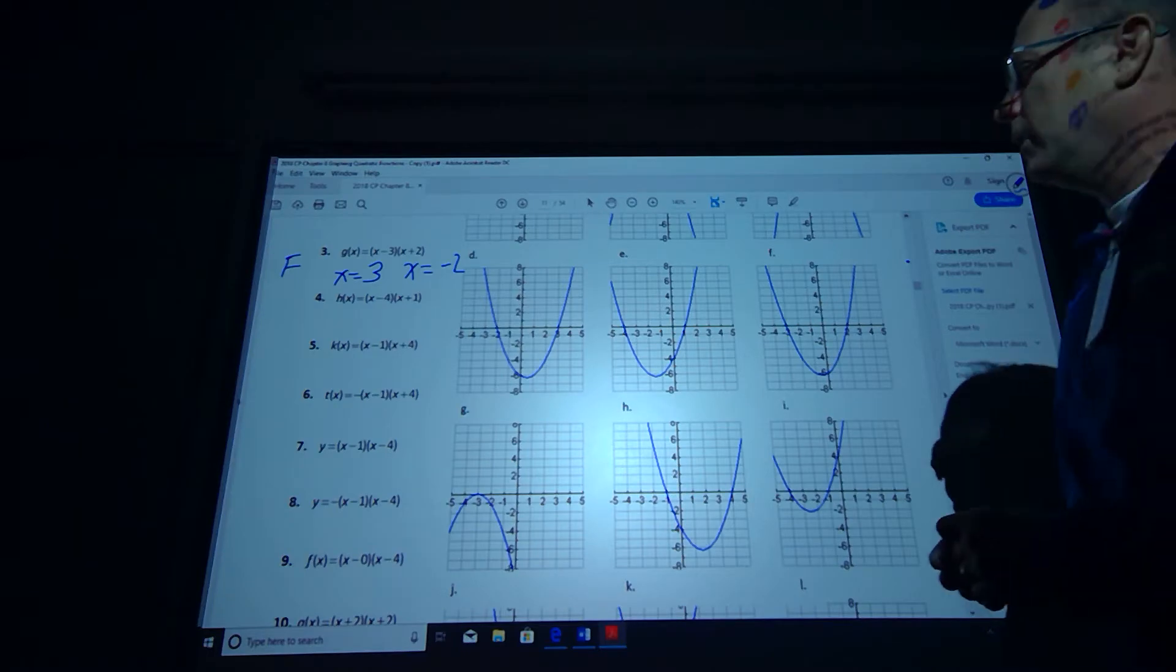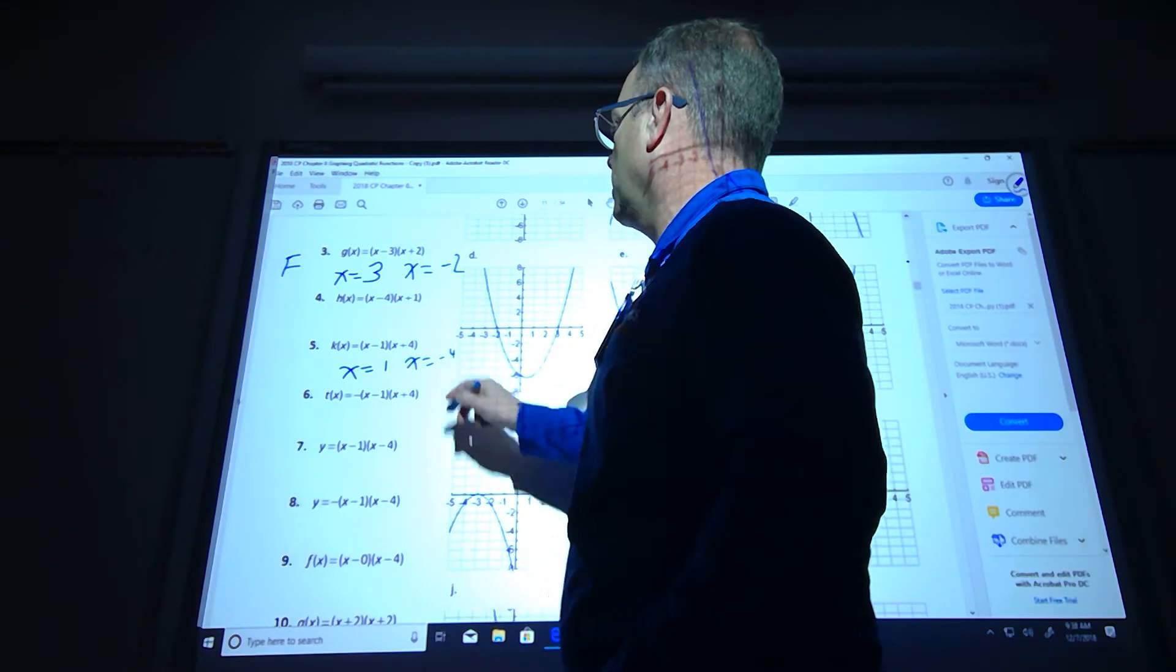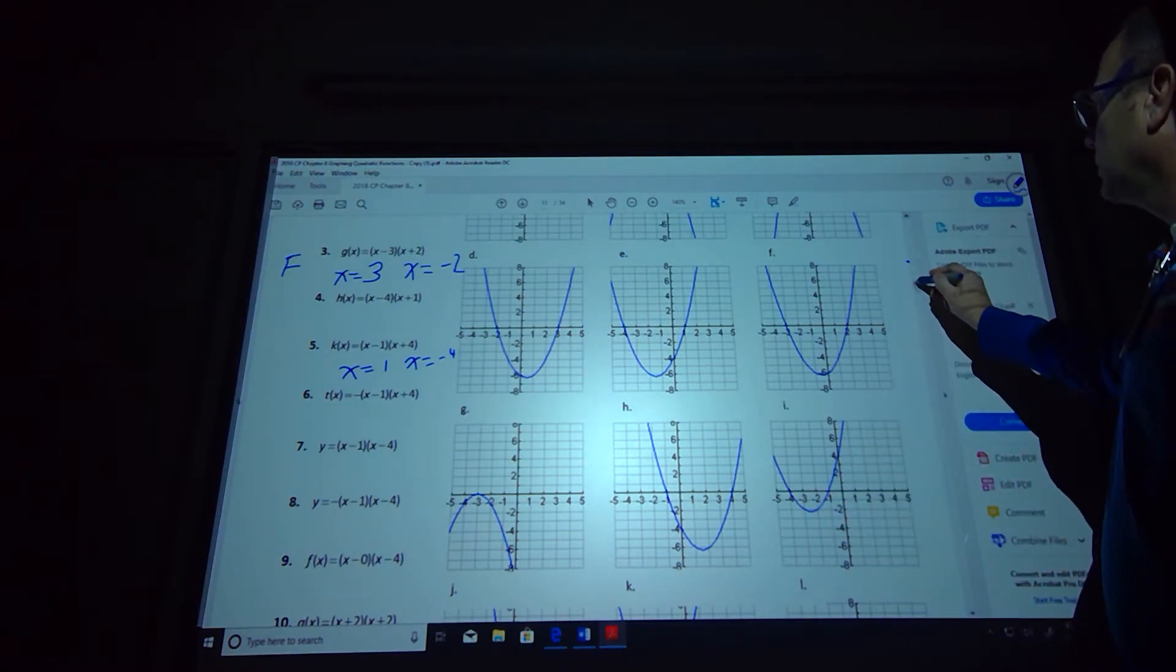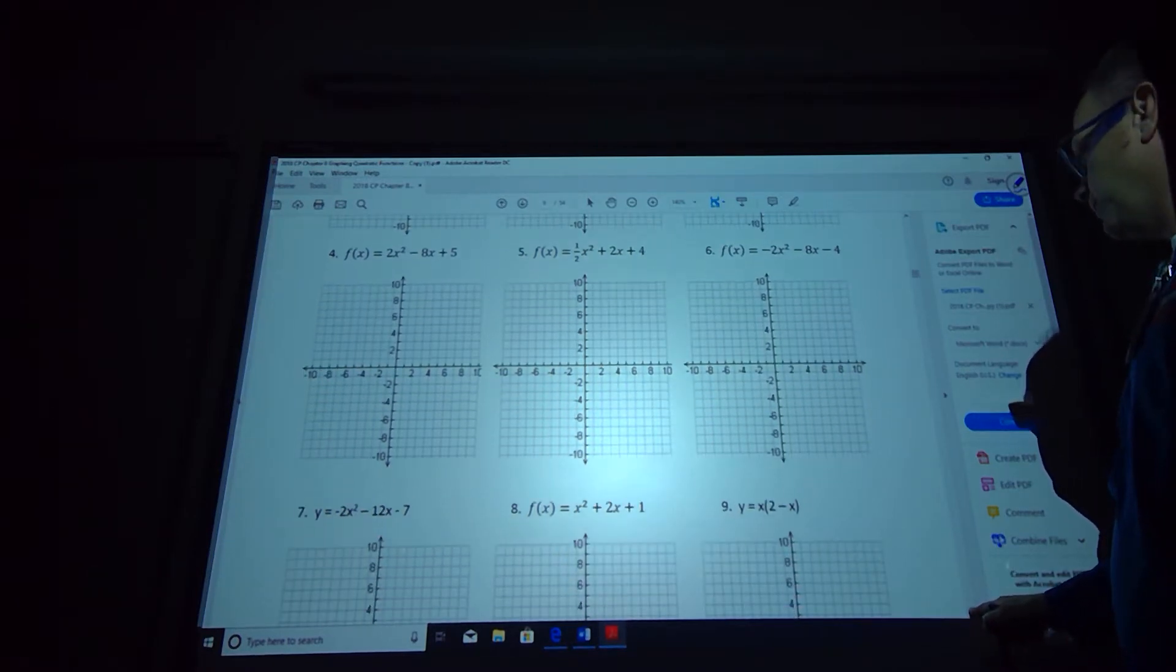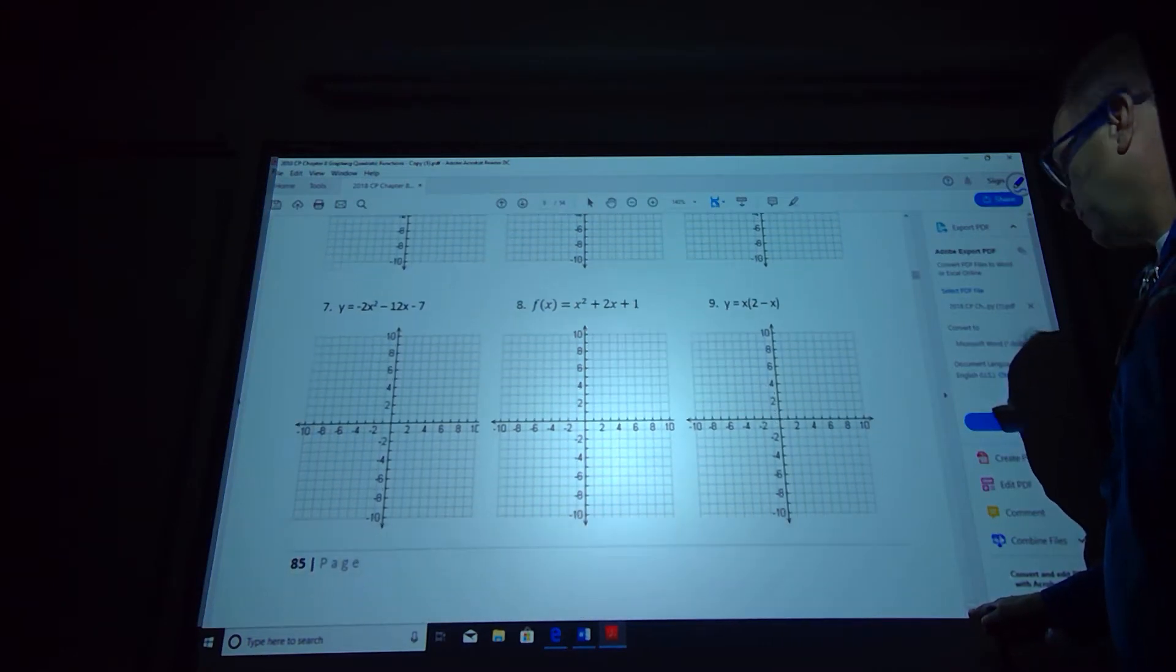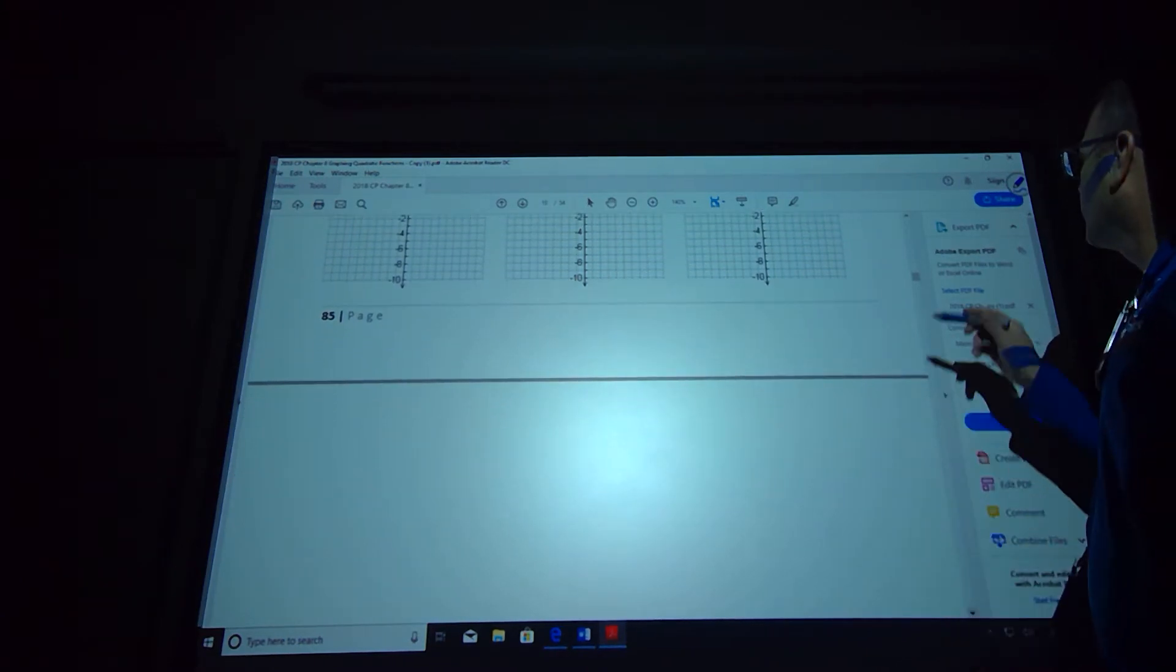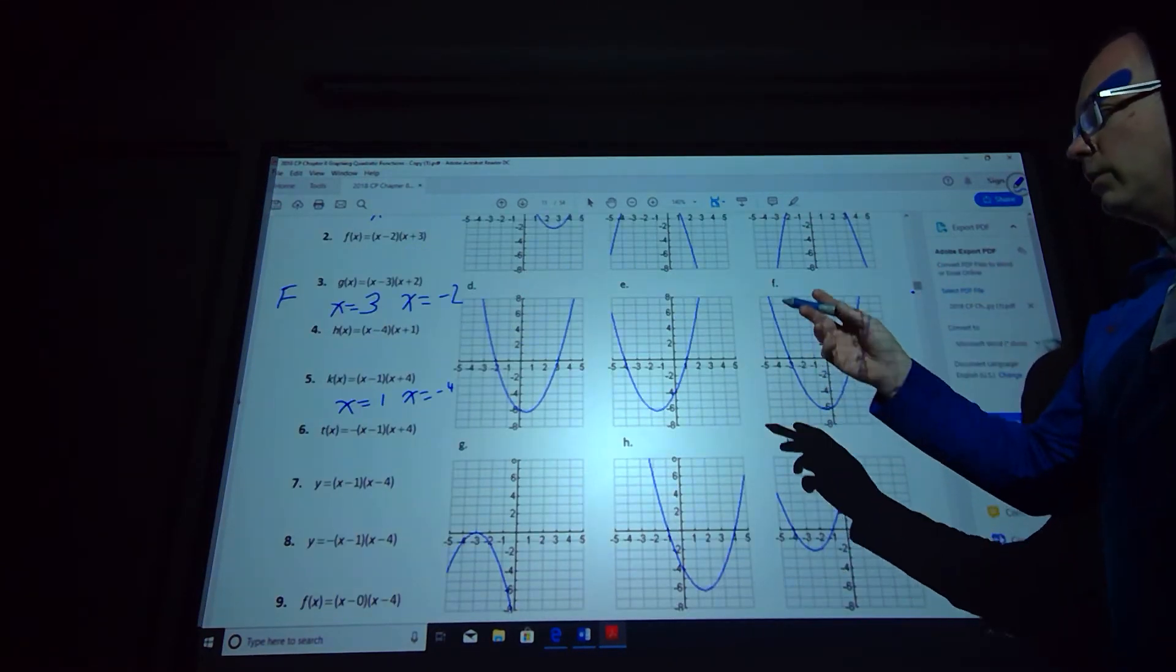Number 5 is going to cross at x equals 1 and x equals negative 4. It opens upward, so we're looking for the one that crosses at 1 and negative 4. So that one's negative 1 and negative 4, let's see if we can find a different one. I went too far down on the screen. So go ahead and look that one up.